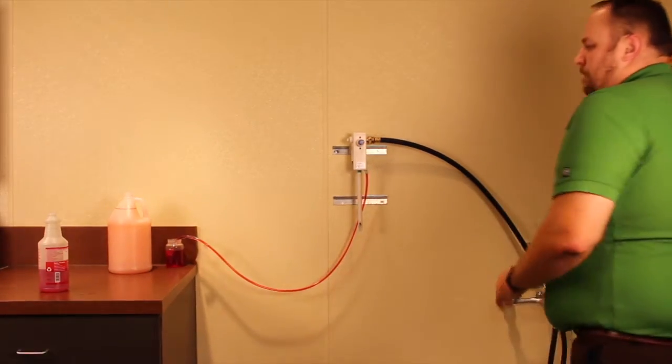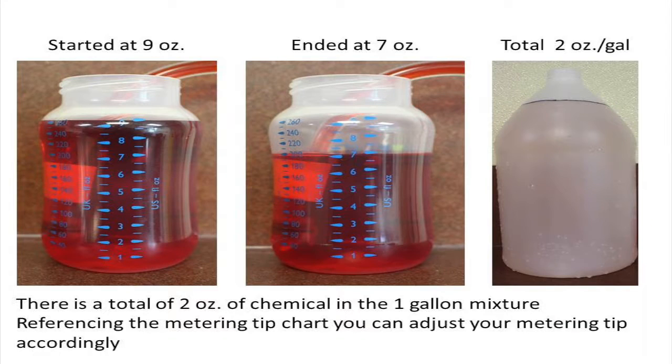Measure how much product was drawn out of the graduated container. That measurement will be the ounces to gallon ratio. That means you have that much product in the one gallon bottle. Retest if necessary.